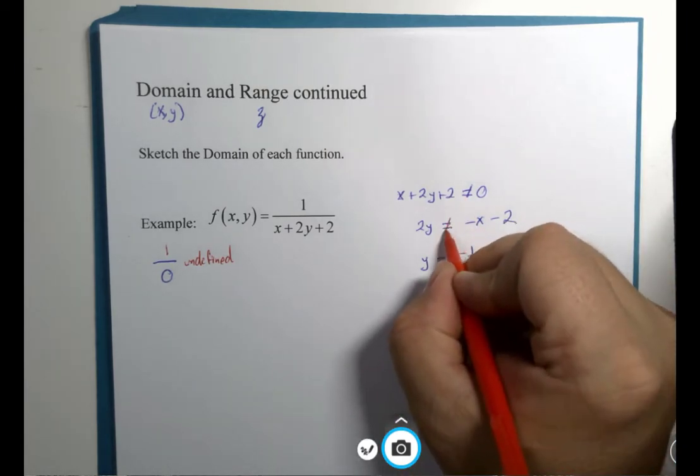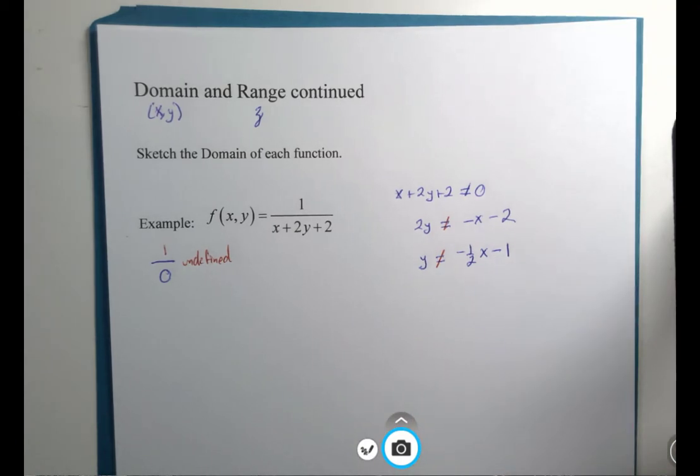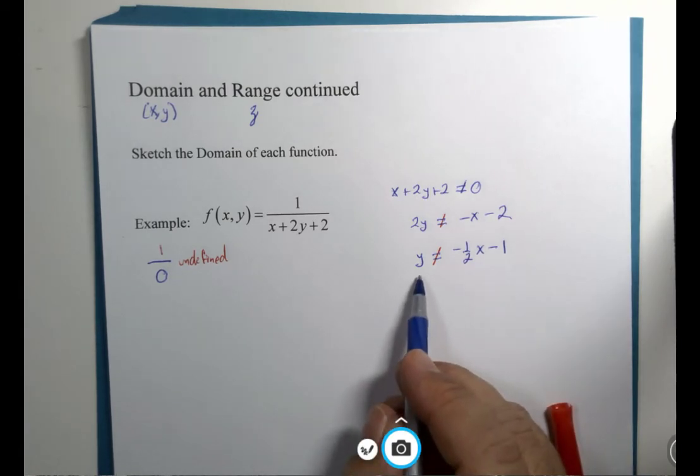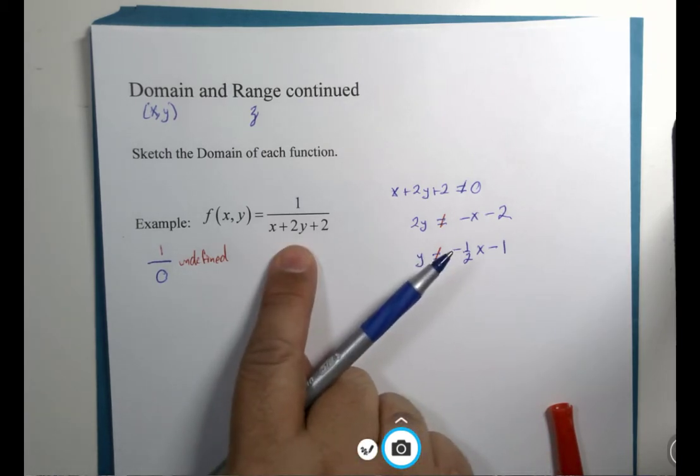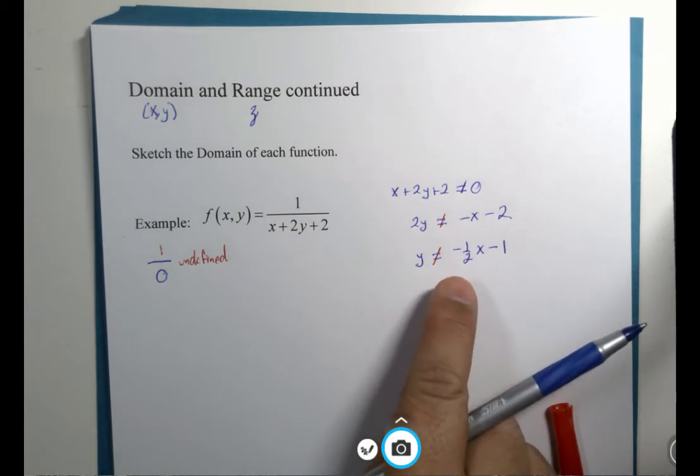This should have remained as a not equal symbol throughout that solve. We're solving an inequation, not an equation. Basically what this is saying is x and y could be any point that's not on this line.